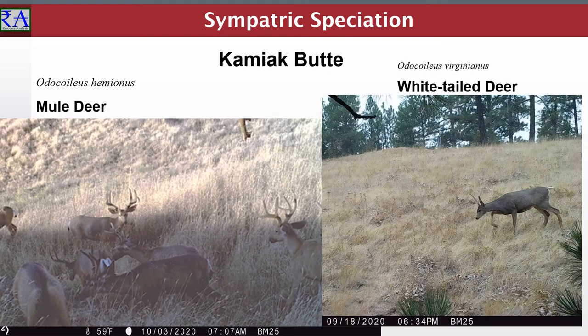In some western regions of North America, the white-tailed deer, Odocoileus virginianus, range overlaps with those of the mule deer, Odocoileus hemionus. Chemiak Butte supports populations of both species. They intermingle during the same periods of the year and on the same sites. These species representatives appeared on wildlife cameras on the south-facing aspect within a couple of weeks of each other.